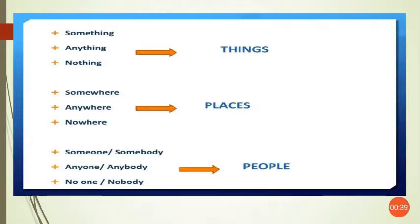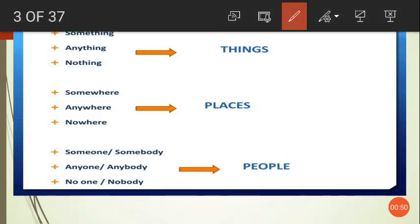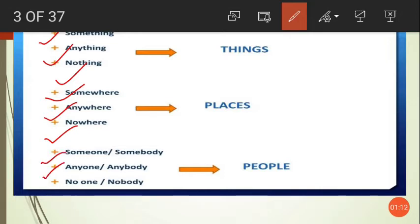Indefinite pronouns may refer to things, places, or people. The indefinite pronouns which refer to things are: something, anything, and nothing. Those that refer to places are: somewhere, anywhere, and nowhere. And the indefinite pronouns that refer to people are: someone or somebody, anyone or anybody, and no one or nobody. These are all indefinite pronouns.